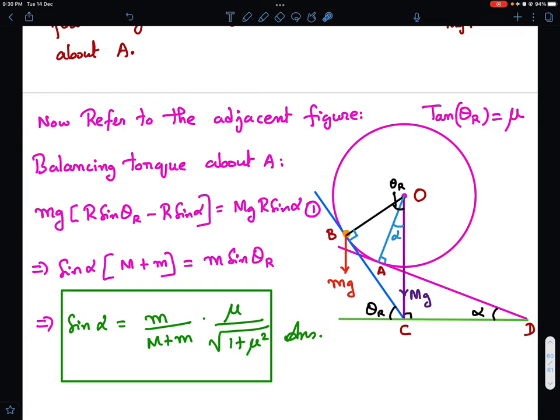And now I can balance the torques about point A. So what is the distance of this small mg from the vertical through point A? If this angle is angle of repose, this is 90 minus angle of repose, and this is 90 minus angle of repose, this angle is 90. So this whole angle is angle of repose again. So this horizontal distance is R sin theta R. And this horizontal distance is simply R sin alpha. So this horizontal distance is capital R sin theta R minus capital R sin alpha.